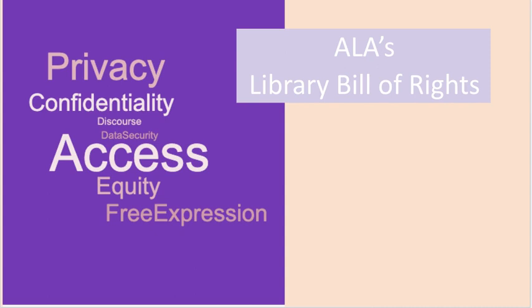Speaking about the varied selection of materials being important, that takes us to access, which is related. When we talk about access, we mean making available books and other print materials, certainly, but there are more ways that libraries ensure access. Libraries provide many users with free internet access and subscription databases and also programming that meets their needs and interests.